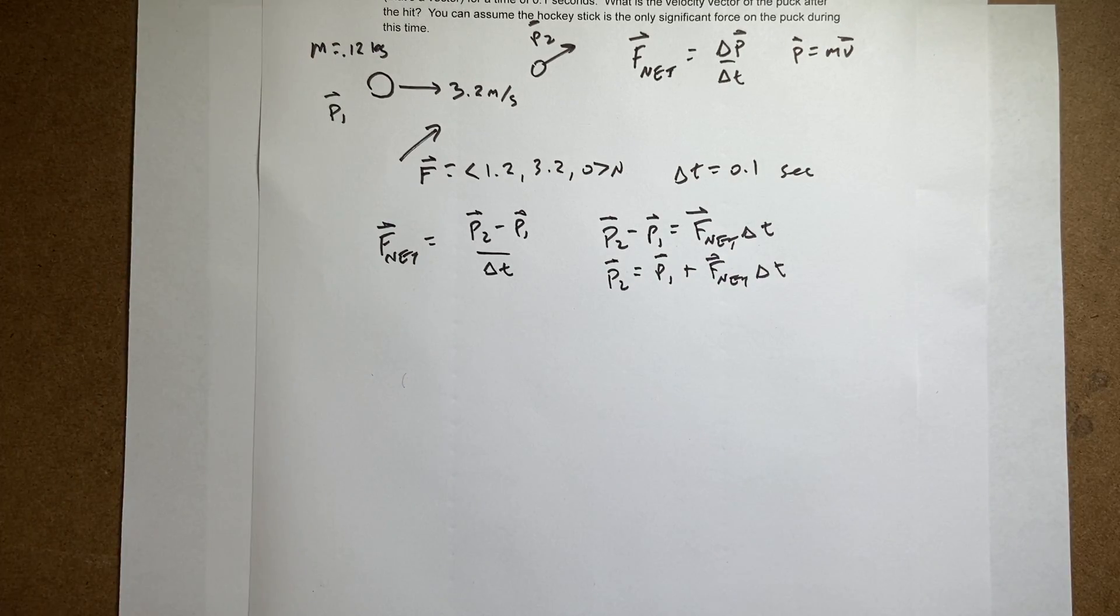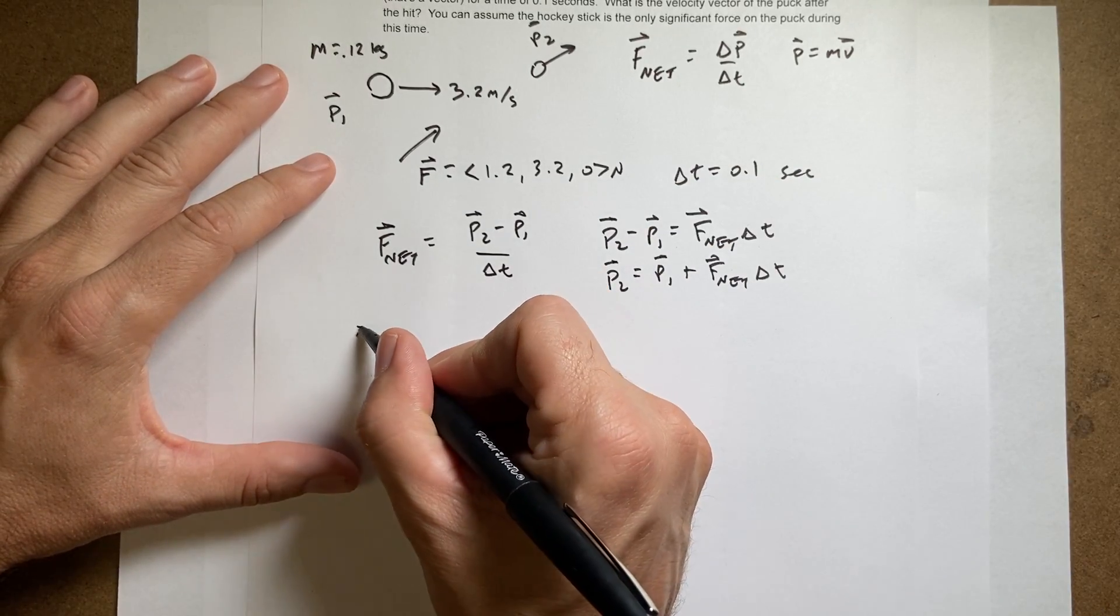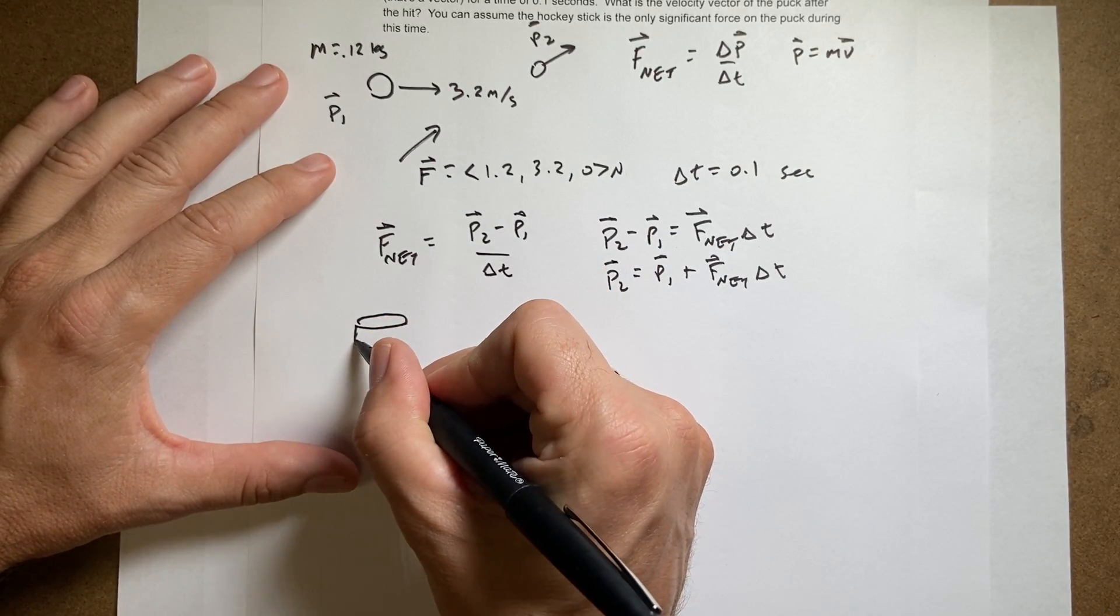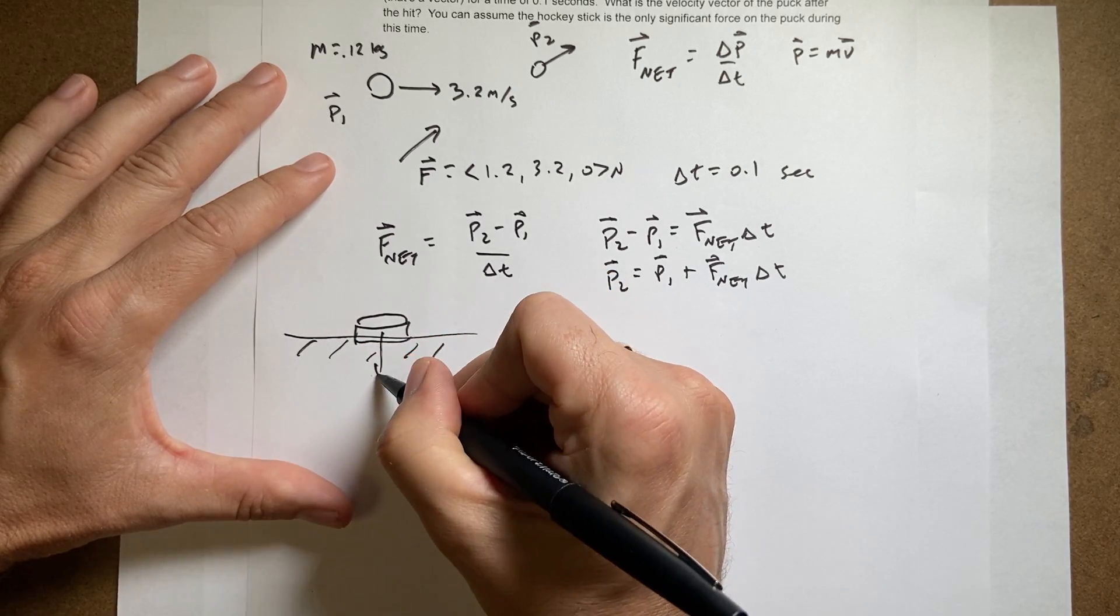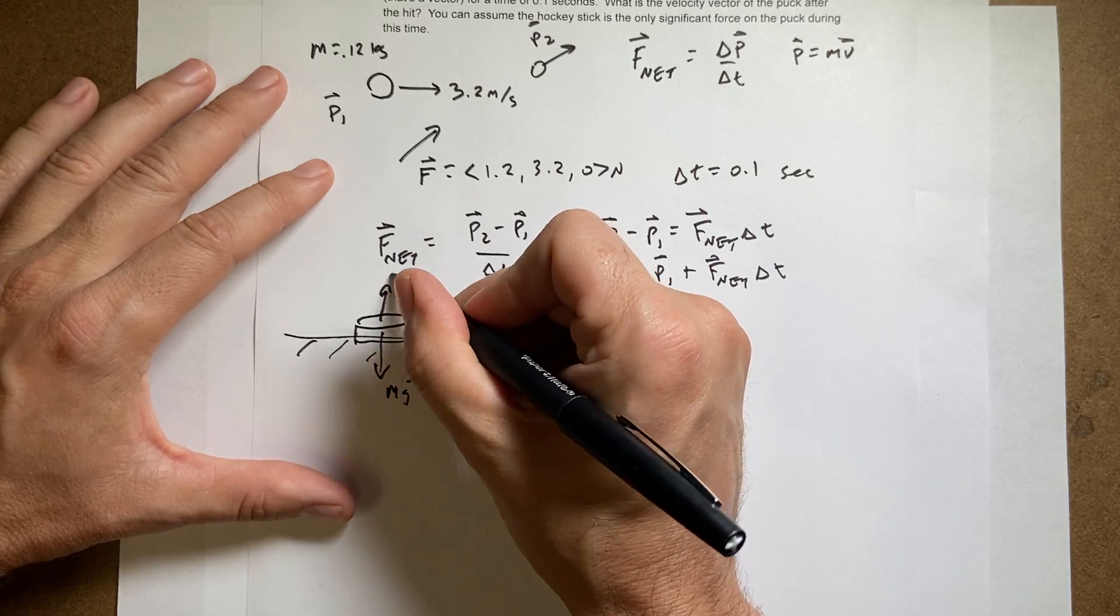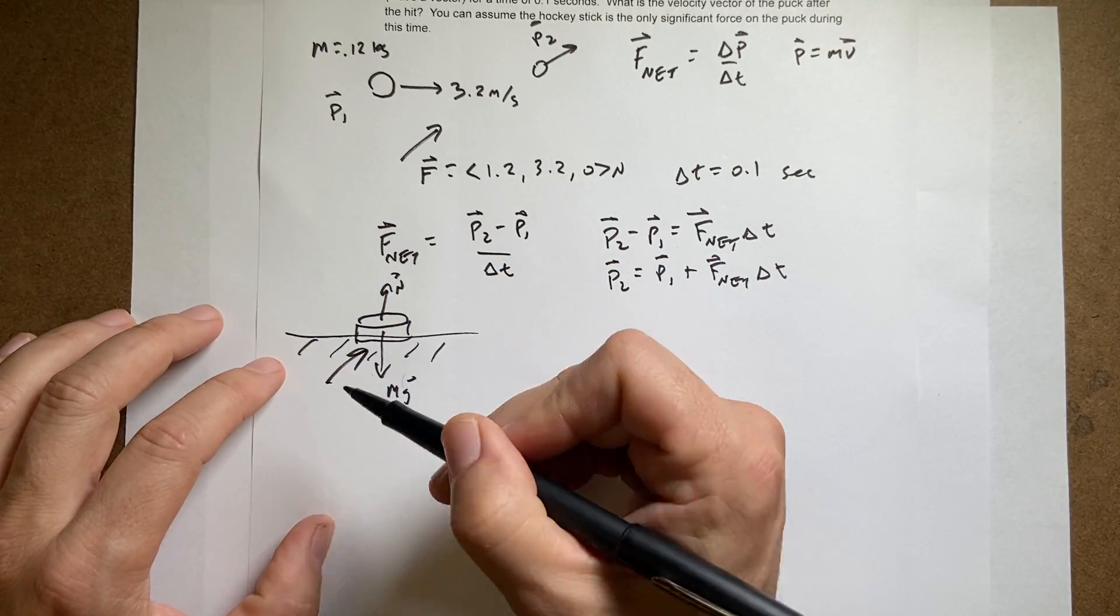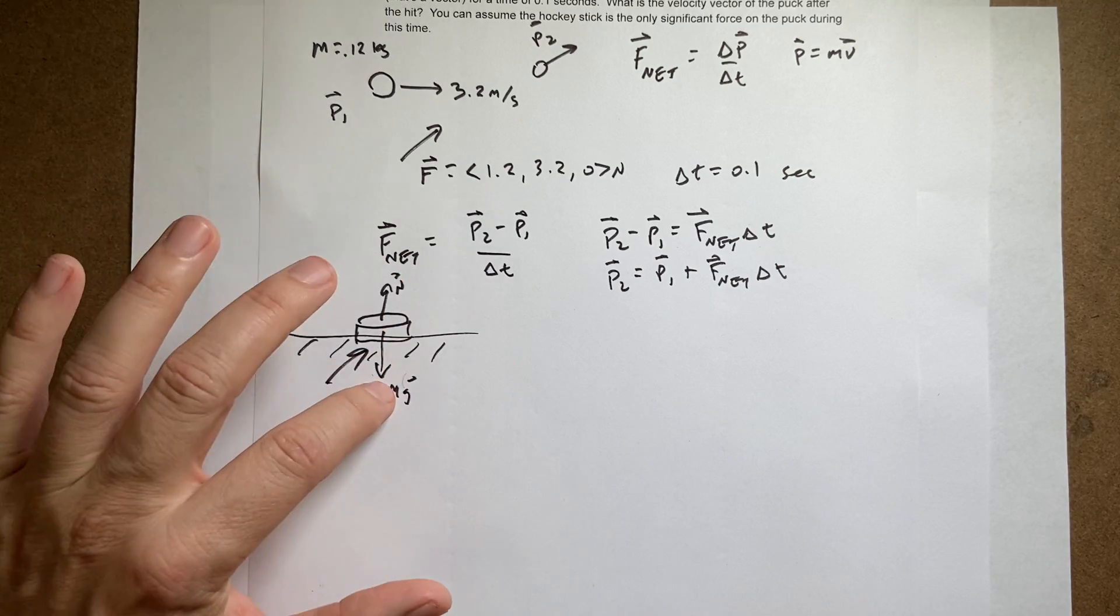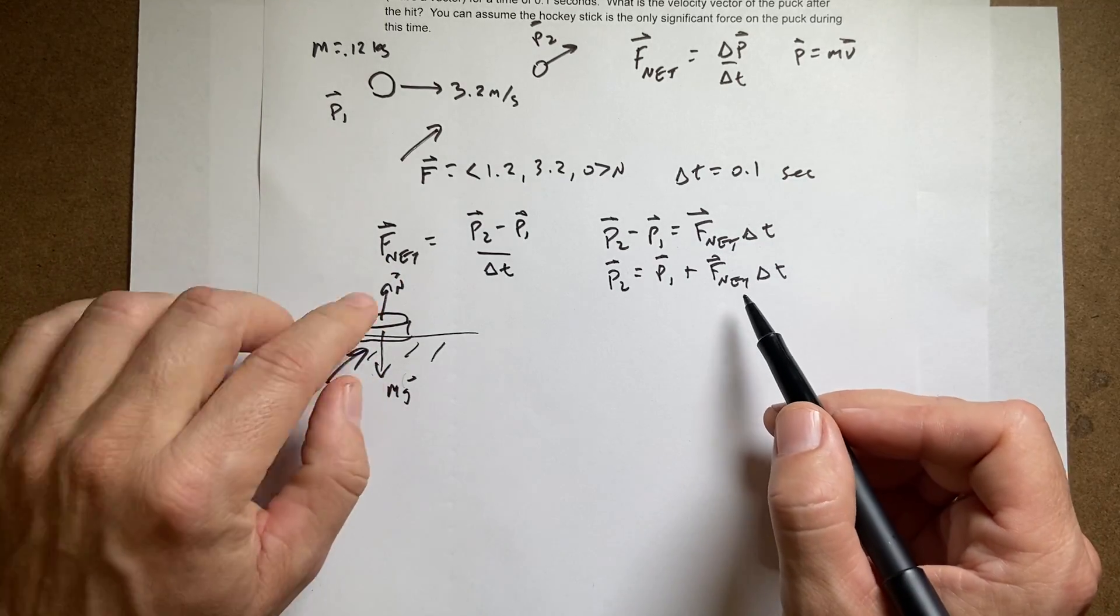Now what is F_net? That's a tough question. But if you think about it, if you look at this from the side view, here's my hockey puck and here's ice. There's a gravitational force pulling down on it, but there's also a normal force pushing up on it with the exact same magnitude. So when I push with this force from the hockey stick, these two forces cancel and the only force on it is from the hockey stick. So F_net is just that.